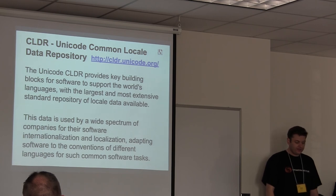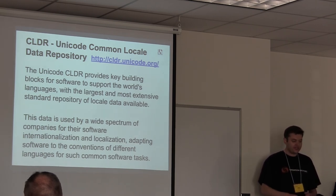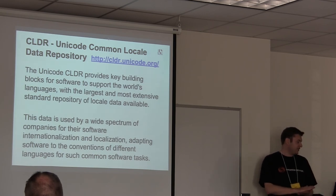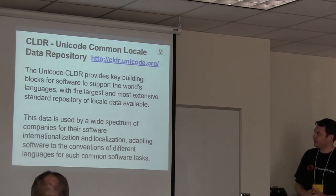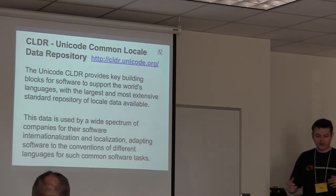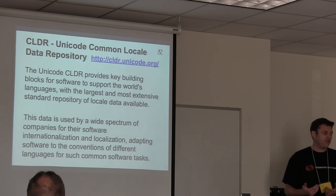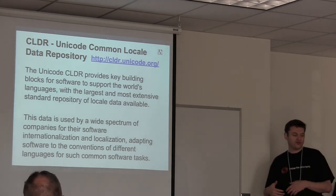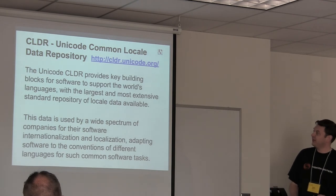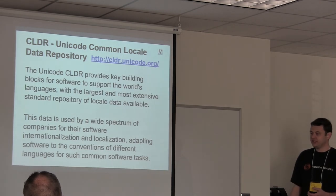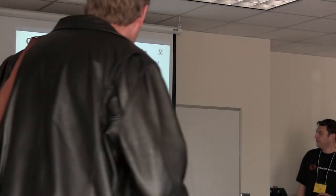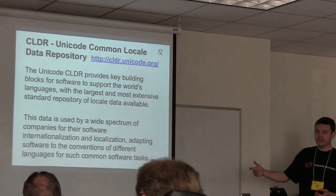There's something known as the CLDR — the Common Locale Data Repository. It's a whole collection of data dumps containing formatting rules, plural rules, language tags, and translations. It's used by a bunch of different libraries — the ICU library pulls it in, among others.